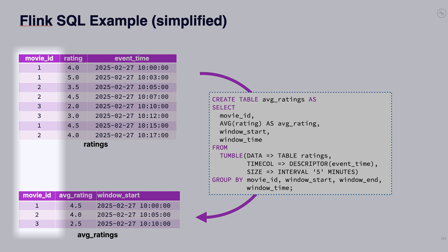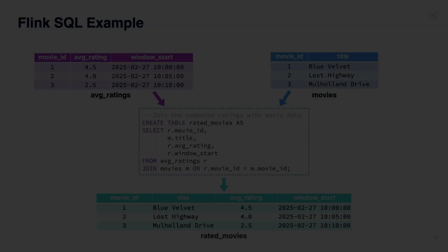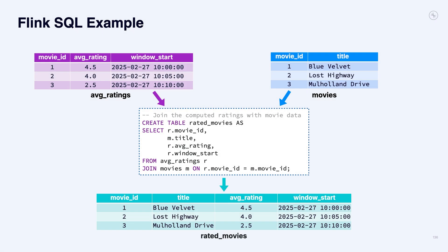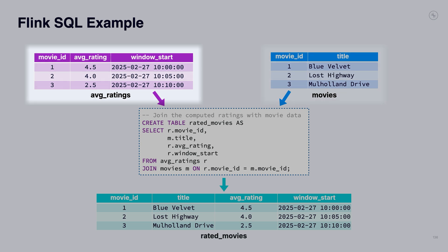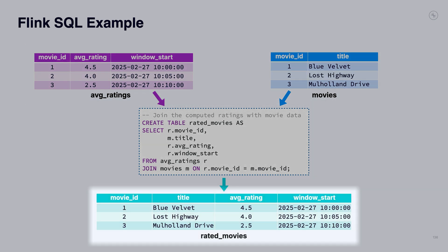I don't know any of these movie IDs — I'd like movie names. It turns out I've got a topic called movies that maps movie IDs to movie names. This is a good example of a compacted Kafka topic where the topic holds entities rather than events. Now I've got a movies table, so I have all the pieces to do what I want. I join the average_ratings table with the movies table, and now I have the rated_movies — actual movie titles and their ratings.